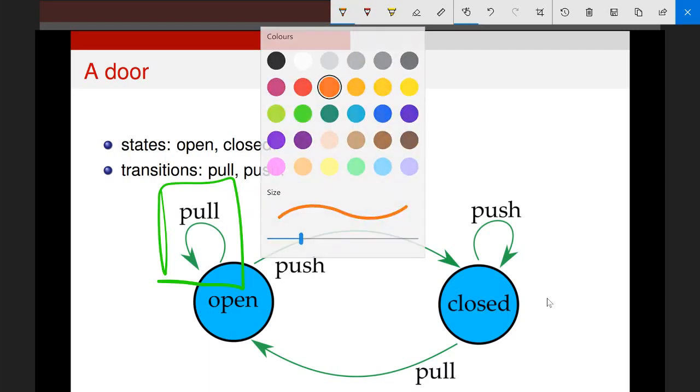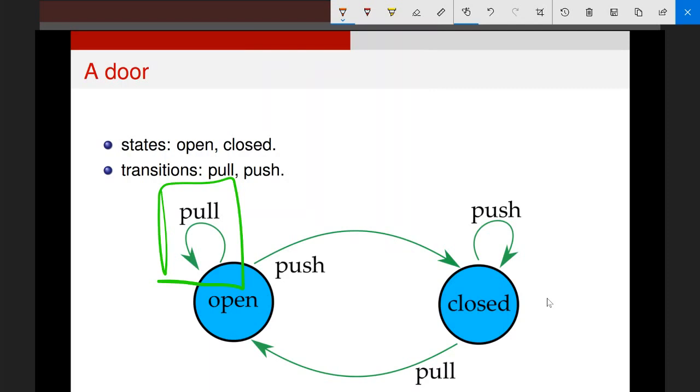By contrast, what happens when we push a door when it's open? Well, we follow this transition here, and we move over to the door being closed. Just like before, if we push the door when it's closed, we stay in the same state. And it's only when we pull it, we make this transition back to the state over here.